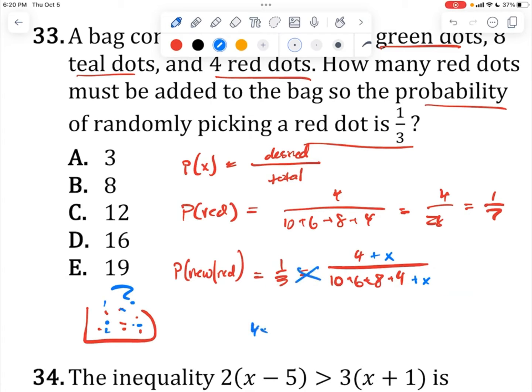Cross multiply: 4 plus x times 3 equals 28 plus x. This becomes 12 plus 3x equals 28 plus x. Subtract x on both sides, subtract 12 on both sides. You get 2x equals 16 divided by 2, x equals 8. So once you add 8 red ones, you will end up with a probability of 1 over 3.